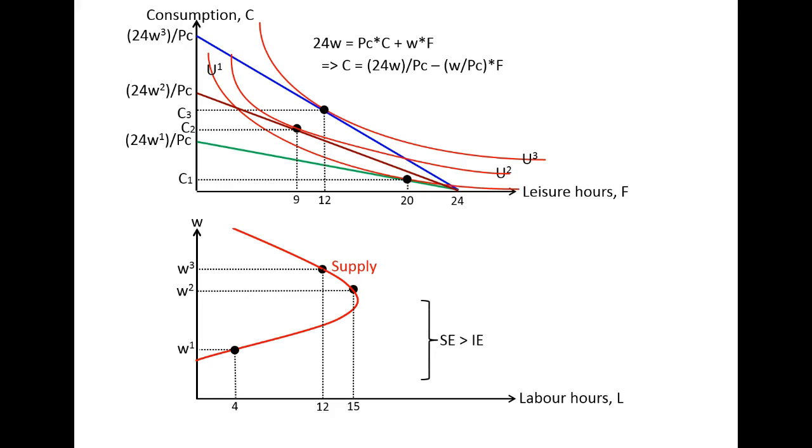If you look at it, as long as we have a positive sloping supply function for labor, the substitution effect of a wage rate dominates the income effect. But, when we have the backward sloping part, the negative sloping part of the supply function, then we have a situation where the income effect of this wage rate will dominate the substitution effect.